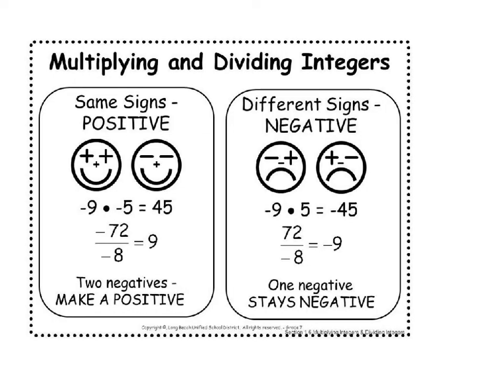Now we're going to look at multiplying and dividing integers — the rules are a little bit different, so keep them straight from adding and subtracting. When they have the same signs, your answer is always positive. So if they're both positive or both negative numbers, your answer is positive — because two negatives make a positive. If you have different signs — one negative and one positive — then your answer is also going to be negative. No matter which number is bigger, if they're different signs and you're multiplying or dividing, your answer is negative.